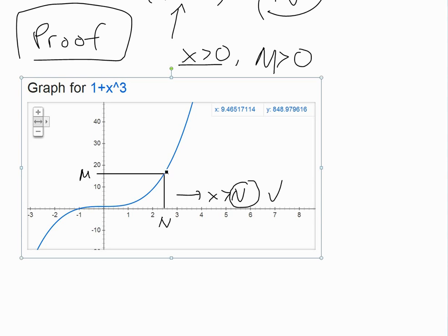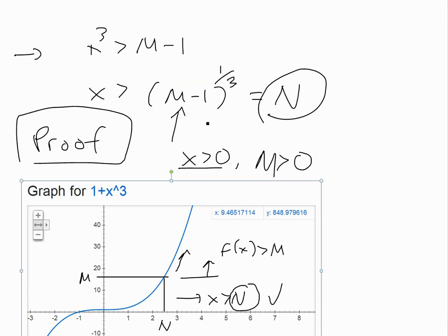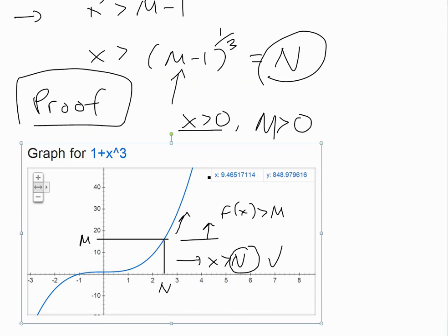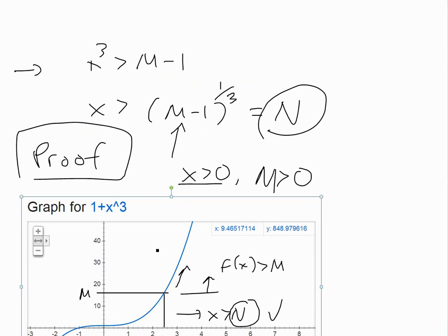Basically, when x is greater than this, as you can see from here, our f(x) is greater than M right here. So that's all it's saying, and in this case, we can actually calculate what the N is based on what our M is.